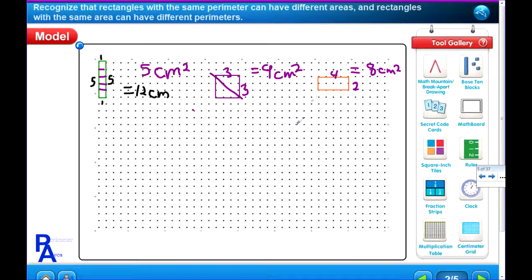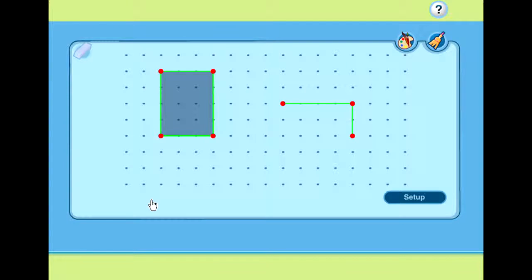Are they all the same shape? No, there's a skinny one, a square, and a fatter one. Do they all have the same area? No, this one had 5 centimeters, this one had 8, and this one had the most of 9 centimeters.